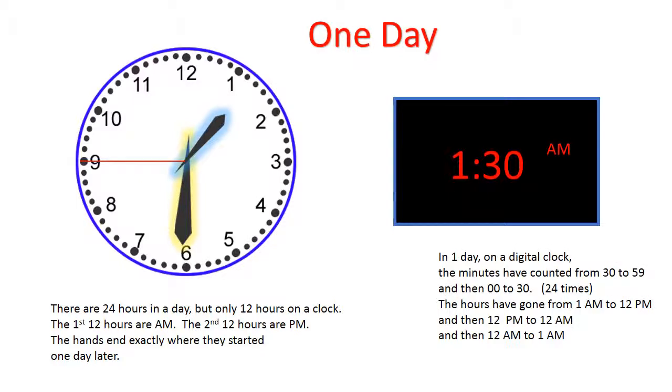In one day, on a digital clock, the minutes have counted from 30 to 59 and then 0 to 30, 24 times. The hours have gone from 1 a.m. to 12 p.m., and then 12 p.m. to 12 a.m., and then 12 a.m. to 1 a.m.